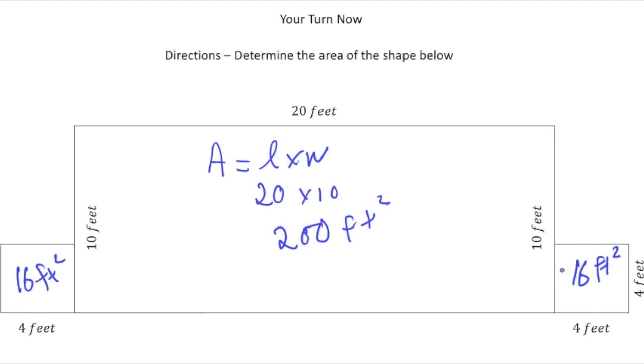Alright, so now to find the area of the whole thing, I need to add 16 plus 200 plus 16, and that would give us 232 square feet. And that's the answer that you're looking for. Alright, how'd you do? Alright, we'll see you next time.